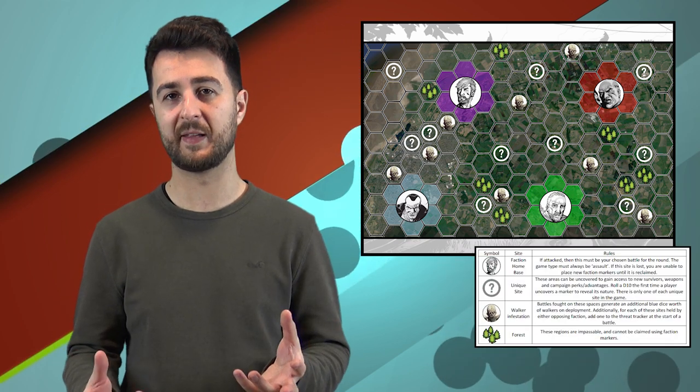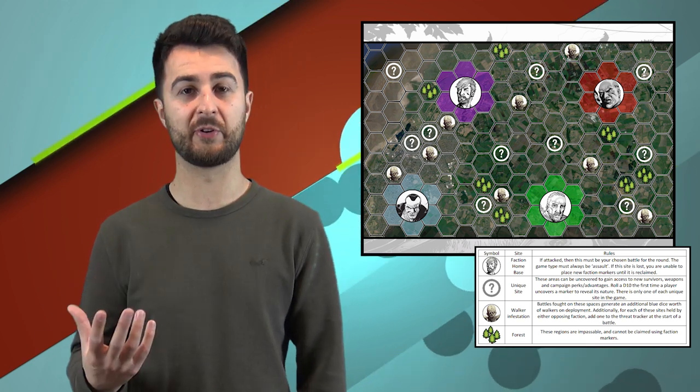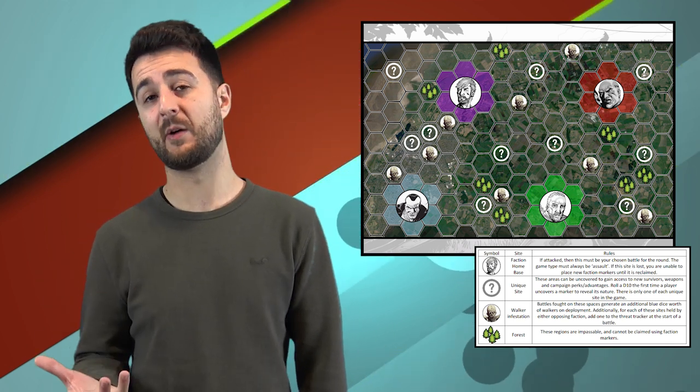We'll talk about crew building in a second, but you'll notice other symbols on the map. Crews are a fixed pool of characters, like Negan Saviors or the prisoner crew, and there's a limited amount of weapons each crew can draw from at the start.